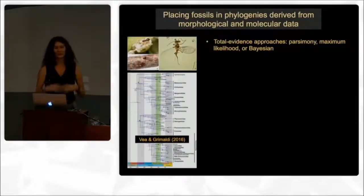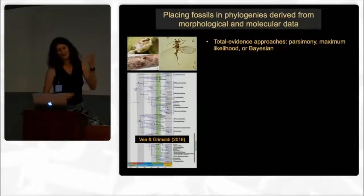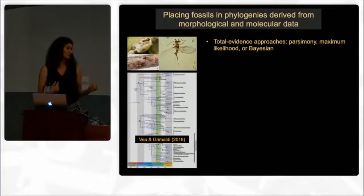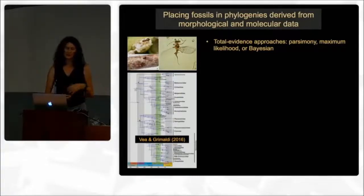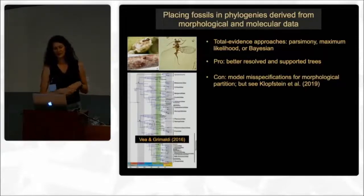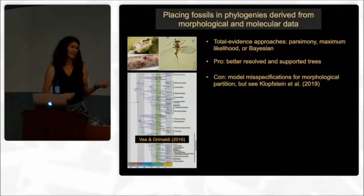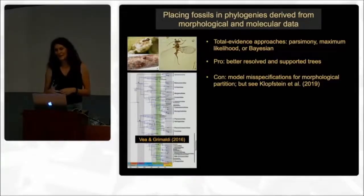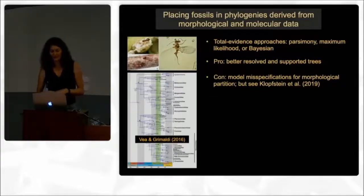Moving on: what about combining morphological and molecular data to include morphological data sets for fossil species and place them in what is called a total evidence approach? You could do that using any of the analytical methods people are using — parsimony, maximum likelihood, or Bayesian approaches. The pros are much better resolved and supported trees, typically. A potential con is that with likelihood or Bayesian approaches there could be model misspecifications for the morphological partition, although some recent studies have shown this may not affect analyses in a really detrimental way.